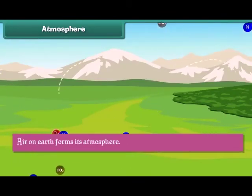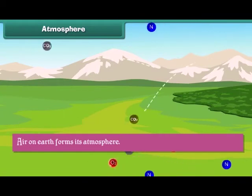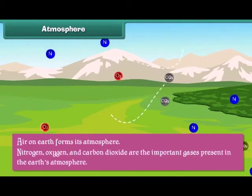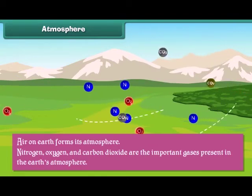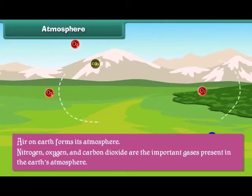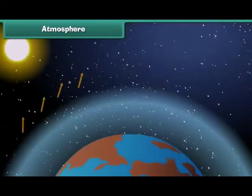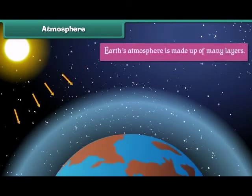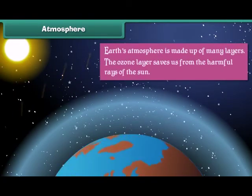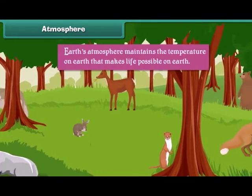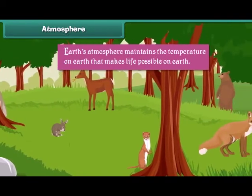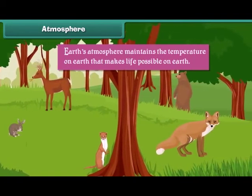Air on Earth forms its atmosphere. Nitrogen, oxygen and carbon dioxide are the important gases present in the Earth's atmosphere. Earth's atmosphere is made up of many layers. The ozone layer saves us from the harmful rays of the Sun. Earth's atmosphere maintains the temperature on Earth that makes life possible.